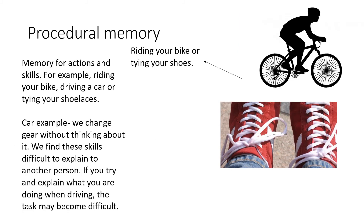Finally we have procedural memory. Examples include riding your bike, tying your shoes, or driving a car. This is your memory for actions and skills. If we look at a car — when we indicate into a junction we don't have to think about that unless you're learning to drive. Once you've learnt, you will automatically do it, and if you try to explain what you're doing to somebody else, the task itself becomes very difficult.